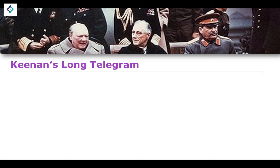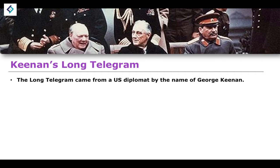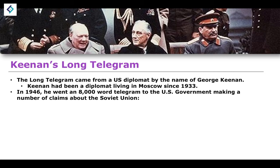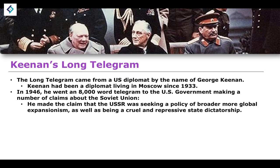On top of the Iron Curtain speech, we also have the Long Telegram. This was a telegram that was quite long, as the name suggests, that came from US diplomat George Kennan. Kennan was a diplomat who had been living in Moscow since 1933, so he had quite a lot of insider information relating to the way in which politics was operating within the capital of the Soviet Union. In 1946, the Long Telegram was sent to the US government — it was 8,000 words. It made a number of claims about the Soviet Union: that the USSR was seeking a policy of broader global expansionism, and also that the Soviet Union was a cruel and repressive state dictatorship.